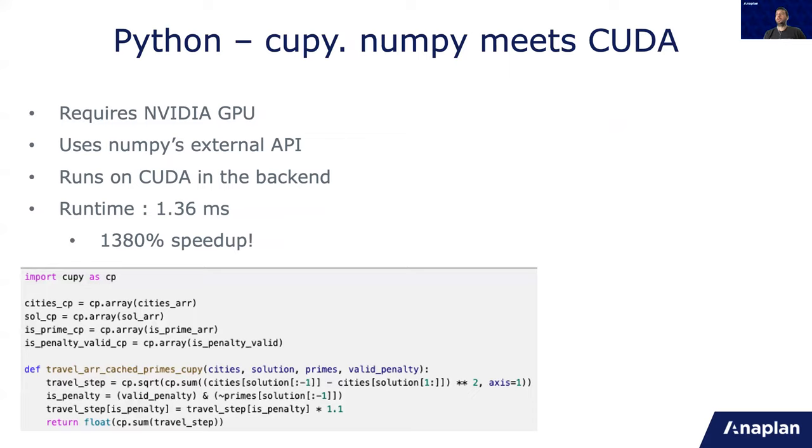So introducing CuPy. As I said before, it requires NVIDIA GPU. It uses NumPy API, but in the backend it runs on CUDA and it's super fast. The speedup is more than five times the speedup of NumPy. It's 1,310%. And what needs to change? Instead of using NumPy operators and NumPy arrays, you need to use CuPy operators and CuPy arrays. That's it. The only minus is that not all the functions which exist in NumPy exist in CuPy, but a lot of the main functions are. So it works. Here it works really well.